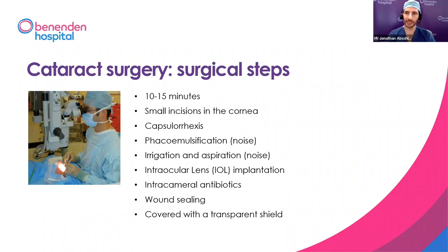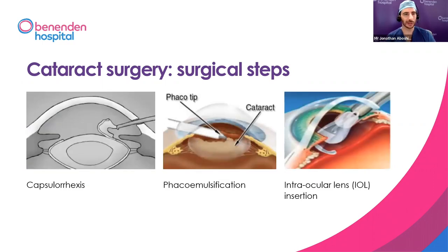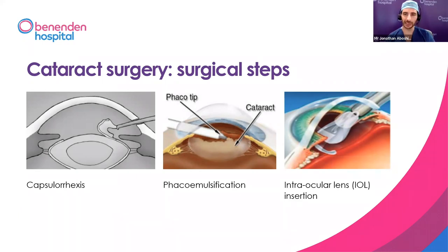Then we give you a transparent shield and you go next door to recover. The surgical steps as I described: the capsulorrhexis makes the little opening in the clear capsule. The phacoemulsification probe breaks up the lens with ultrasound — that can be a little noisy. Then there's the lens insertion — the lenses are now very clever, folded up like little tacos, going in through tiny two-millimetre incisions and opening up inside. They're much safer and cleaner than even 20 years ago.